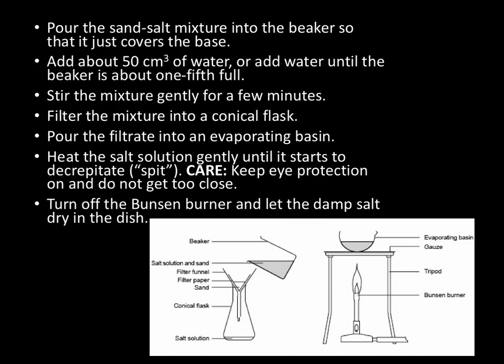So we make up a solution of our salt and sand with 50 centimetres cubed of water. This will mean that all of the salt dissolves but the sand does not. We can then use filtration in order to separate this out. Using a filter funnel and filter paper we can collect the sand whilst the salt solution passes through the filter. We can then dry this sand to get our pure sample.